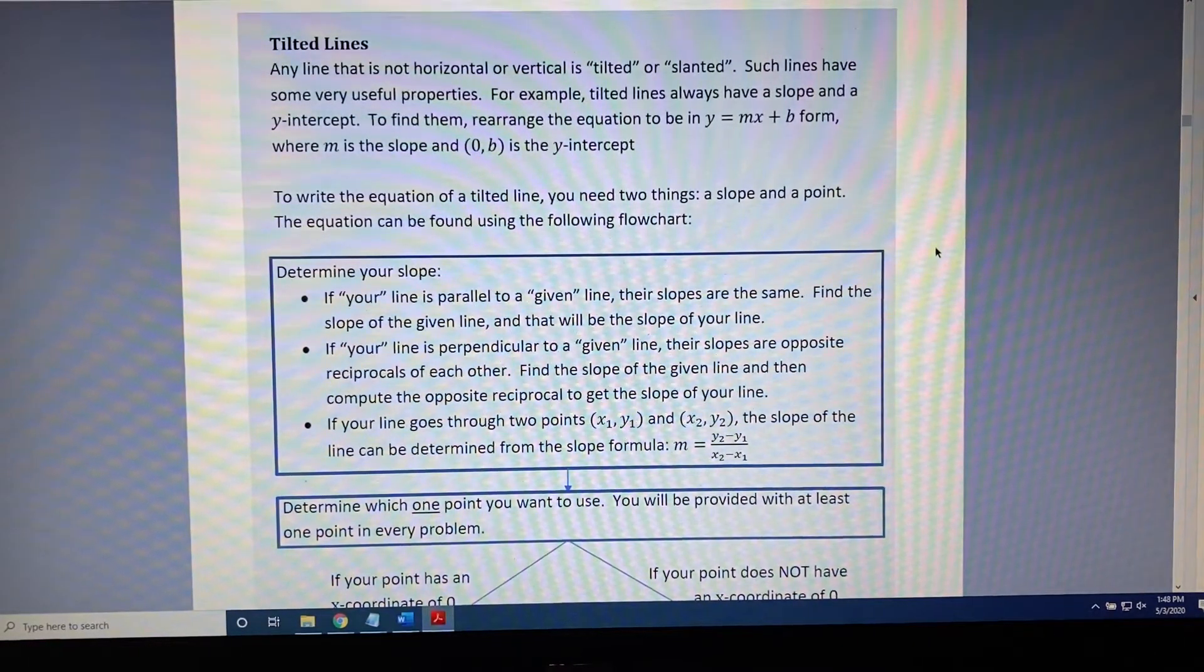To write the equation of a tilted or slanted line, you need two things: a slope and a point. The equation can be found using the following flowchart.